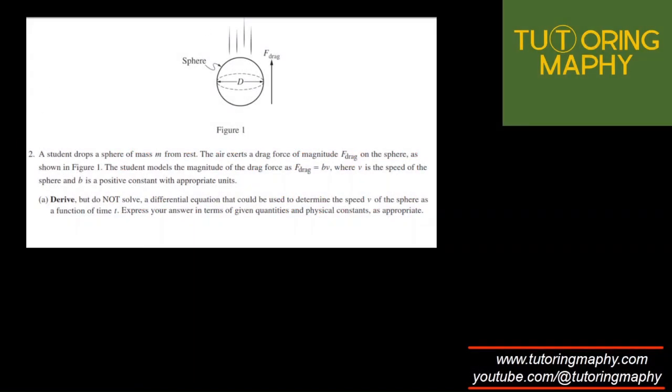A student drops a sphere of mass m from rest and there exists a drag force of magnitude F_drag on the sphere as shown in the figure. The model for the magnitude of the drag force is BV where V is the speed of the sphere and B is a positive constant. Derive but do not solve a differential equation that could be used to find the speed as a function of time. Enter your answer in the given physical quantities and the physical constants.